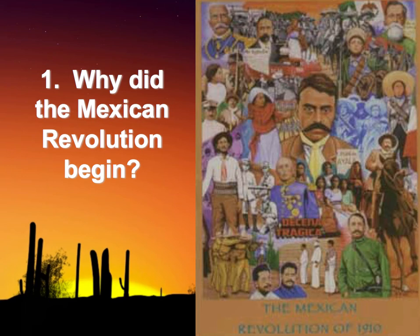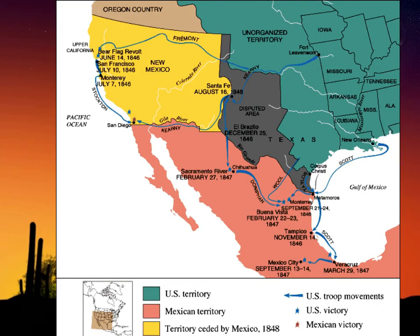Mexico had a relatively unstable government and was left open to foreign intervention. If you think back to the Mexican-American War, Mexico loses about half of its land. As a result, there was a large distrust of foreigners and a sense of nationalism.